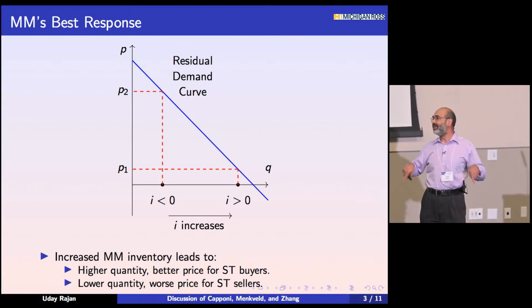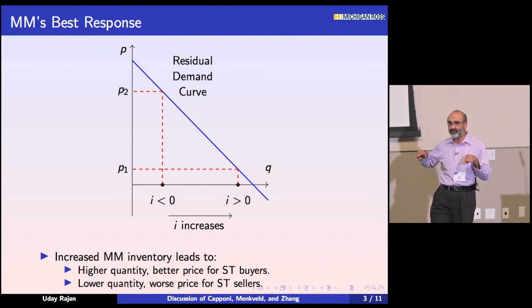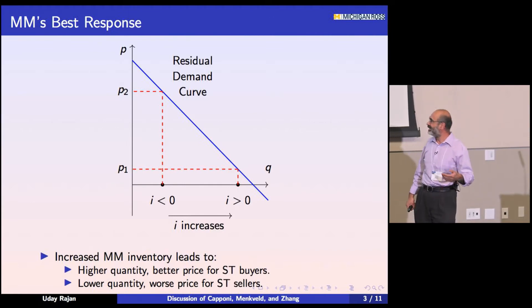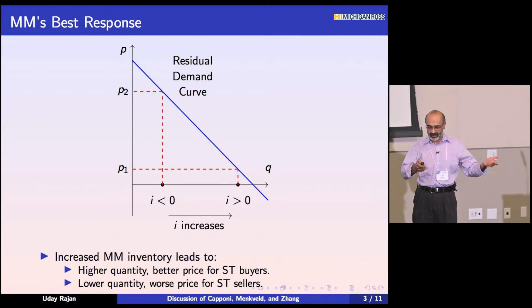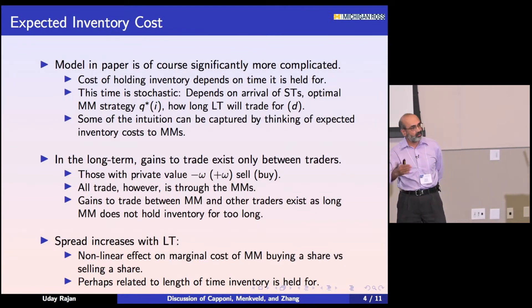It's exactly the converse for sellers. If my inventory as a market maker is higher, I sell them a lower quantity and offer them a worse price.